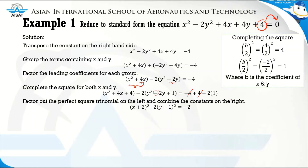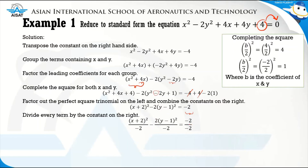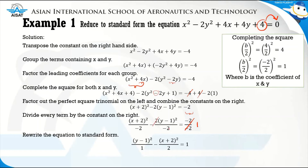The next step is to divide every term by the constant on the right, which is negative 2. Dividing by negative 2 gives 1 on the right side. Rewriting in standard form: (y minus 1)² over 1 minus (x plus 2)² over 2 equals 1. This is the standard form of the hyperbola for our first example.